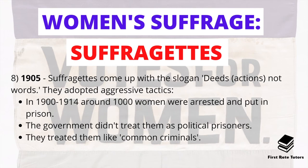In 1905 the suffragettes came up with an important slogan: 'deeds not words,' adopting very aggressive tactics. Between 1900 and 1914, around a thousand women were arrested as a result of these violent and aggressive tactics and put in prison. Bear in mind that the government did not treat them as political prisoners — they were treated like common criminals in prison.